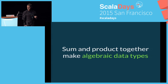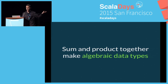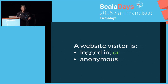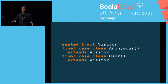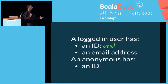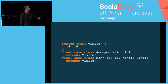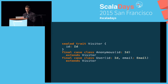Sum and product types together make algebraic data types. Going back to our website visitor example: as soon as you see the logical OR, bang — apply the pattern. Sealed trait Visitor, final case class Anonymous extends Visitor, final case class User extends Visitor. You can just Keyboard Cat that out. A bit of thinking and then it's just coding away. If we say the logged-in user has an ID and an email address — anonymous just has an ID — soon as you get that structure, again, we're just in Keyboard Cat mode, applying the pattern.